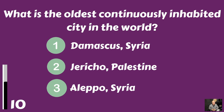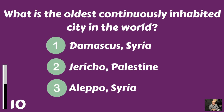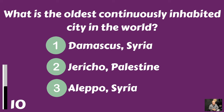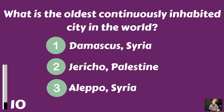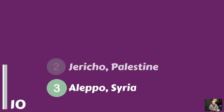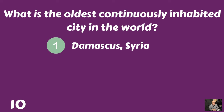What is the oldest continuously inhabited city in the world? The oldest continuously inhabited city in the world is Damascus, Syria.